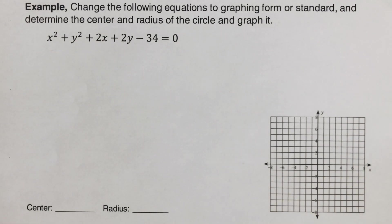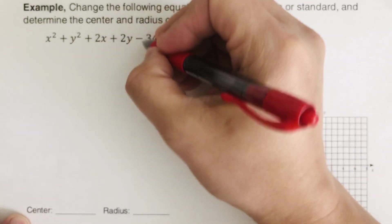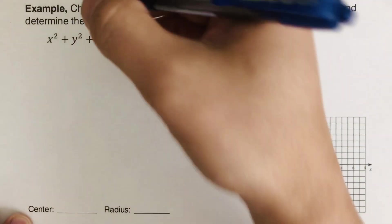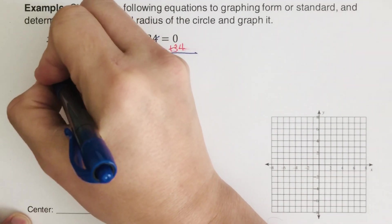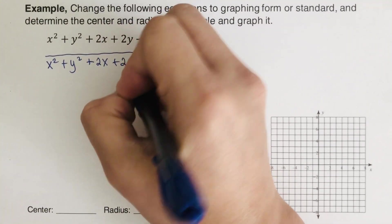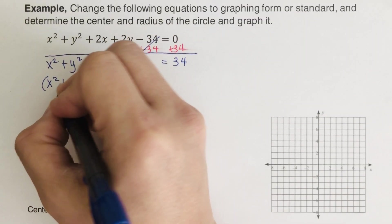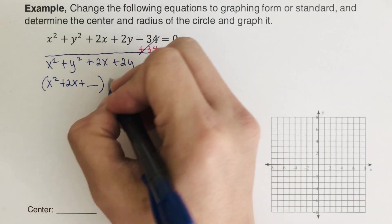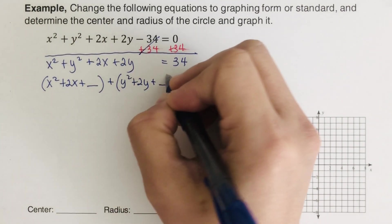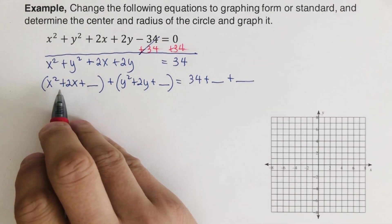For the second example, we do exactly the same steps. First, move the constant to the right by adding 34 to both sides, giving us x squared plus y squared plus 2x plus 2y equals 34. Next, group the x terms — x squared plus 2x plus blank — and the y terms — y squared plus 2y plus blank — and that equals 34 plus blank plus blank.